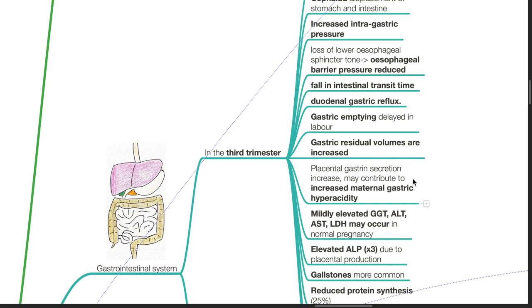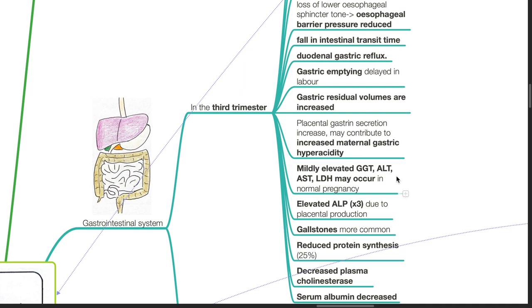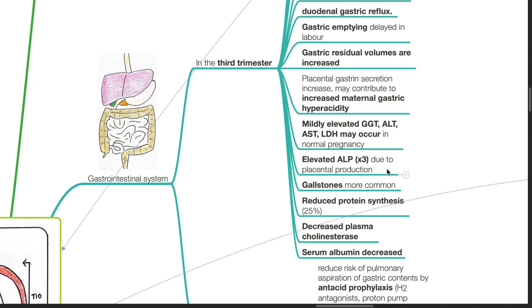There is mildly elevated GGT, ALT, AST, and LDH in normal pregnancy. Elevated alkaline phosphatase up to three times is due to placental production. Gallstones are more common.